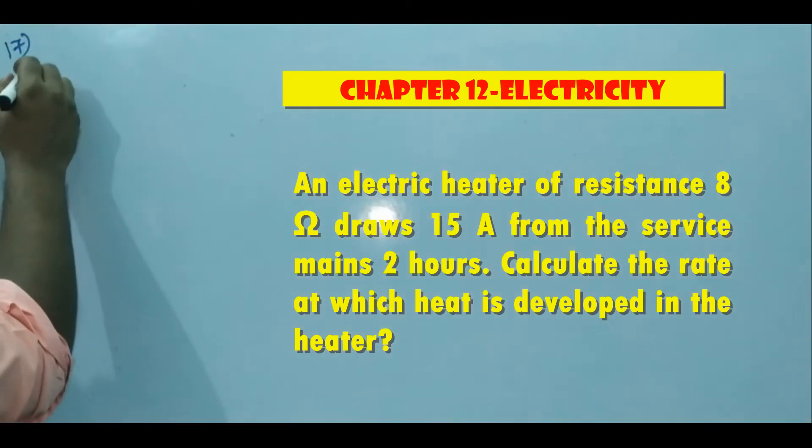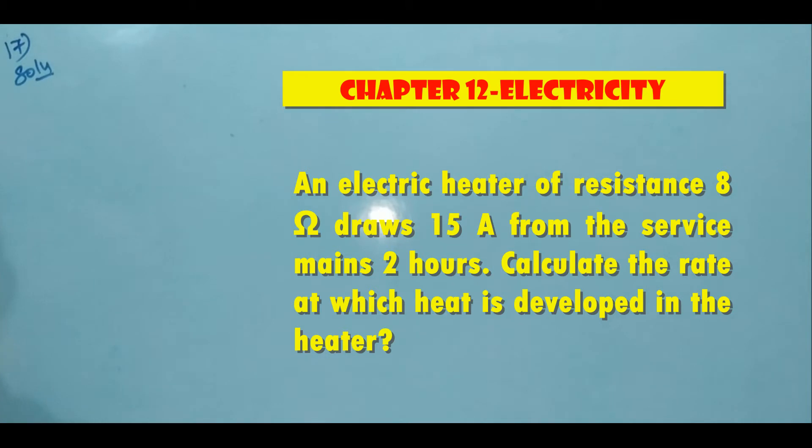17th exercise. An electric heater of resistance 8 ohm draws 15 ampere from the service mains for 2 hours. Calculate the rate at which heat is developed in the heater.